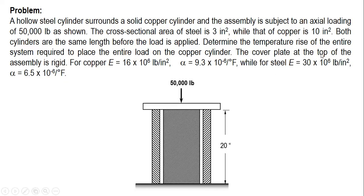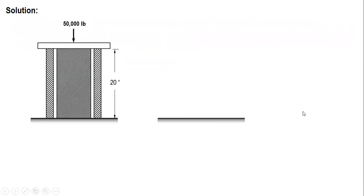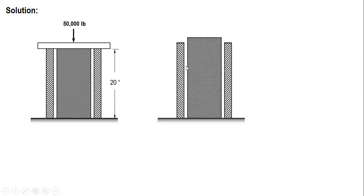And from there, reattach the cover plate and then apply the condition. The condition is to place the entire load on the copper cylinder. Therefore, the steel will not resist the 50,000 pound load, only the copper. So again, first, allow the copper and steel to expand freely. Remove the cover plate. This is what will happen. As we can see, copper is higher since it has a bigger coefficient of expansion, thermal expansion, compared to steel.